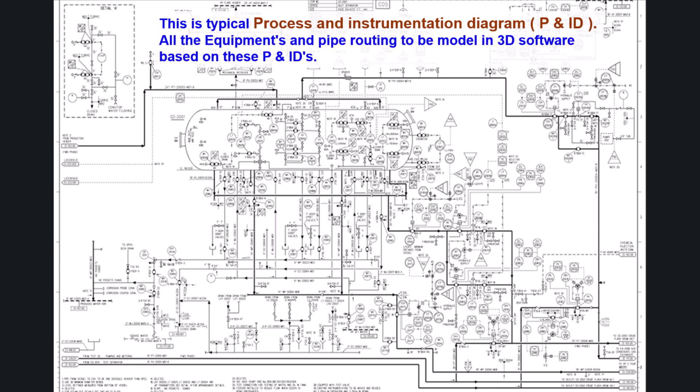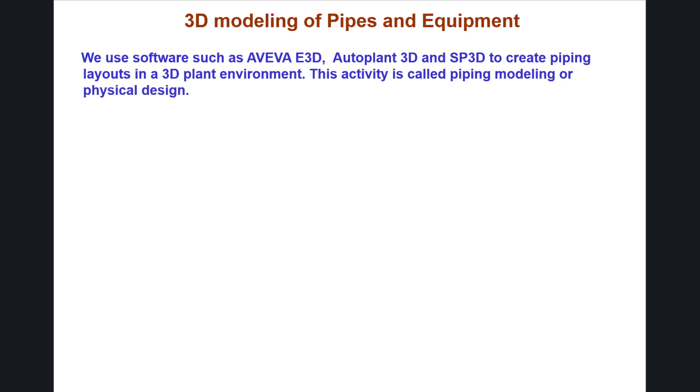This is a typical Process and Instrumentation Diagram (P&ID). All equipment and pipe routing are to be modeled in 3D software based on these P&IDs. For 3D modeling of pipes and equipment, we use software such as AVEVA E3D, AutoPlant 3D, and SP3D to create piping layouts in a 3D plant environment. This activity is called piping modeling or physical design.